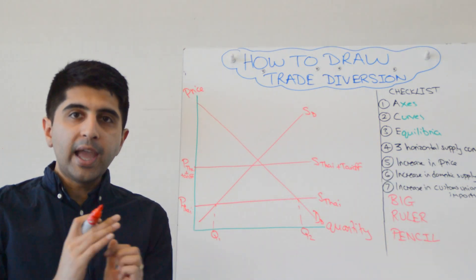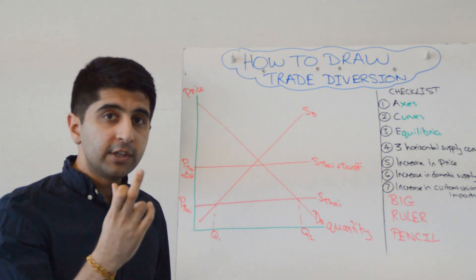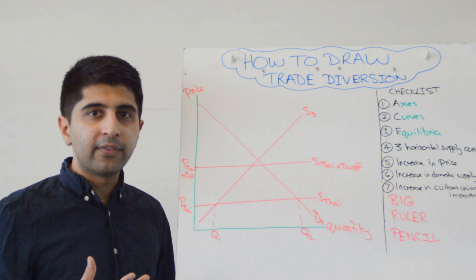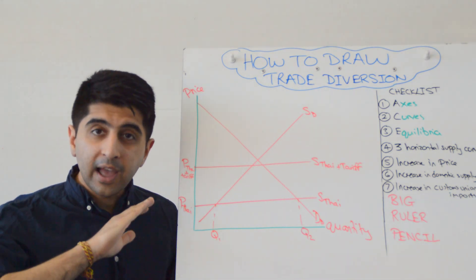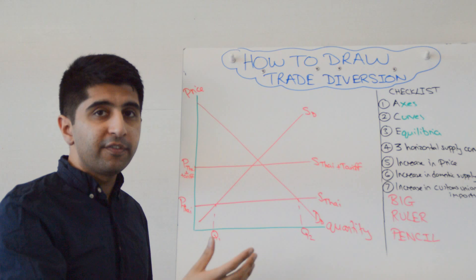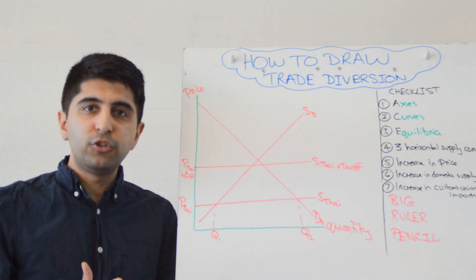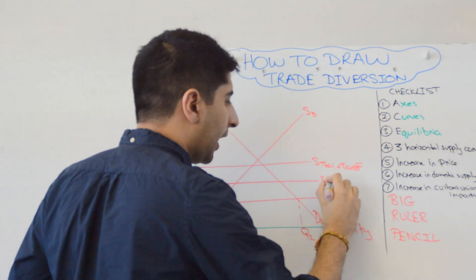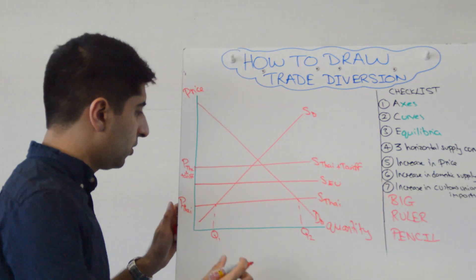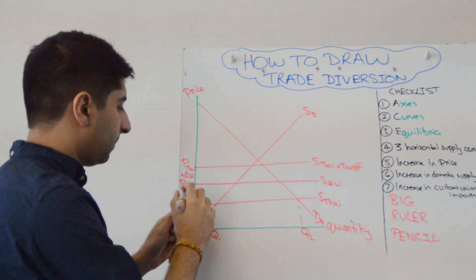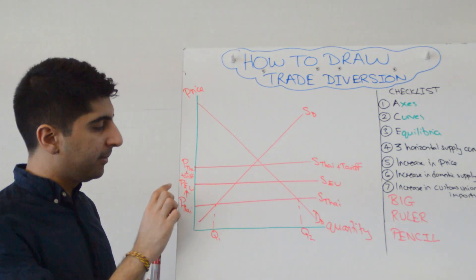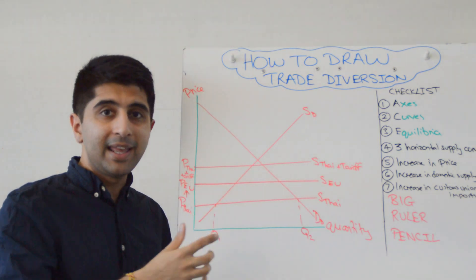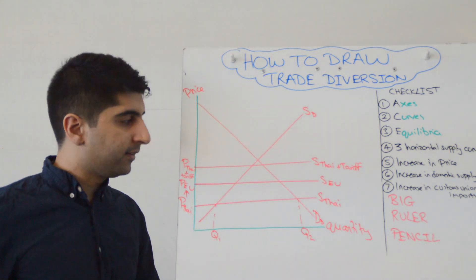Now you don't need to do any quantity labeling here because that is not going to be now the most competitive price. We make the assumption now that because of this common external tariff, Thailand has lost the advantage. This tariff brings in customs union supplies or EU supplies in this case. So you stick a supply curve in the middle and you call that supply EU, and we have here the price EU. That is now the new price in the market because it's lower than the Thailand price with the tariff on top. So that is why the market is now operating for this domestic country.